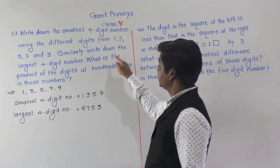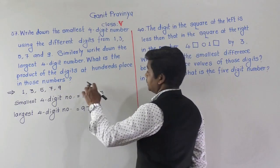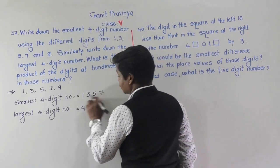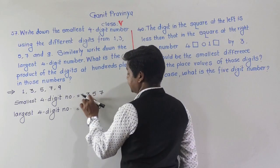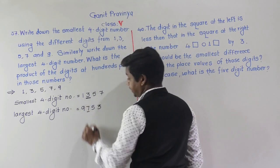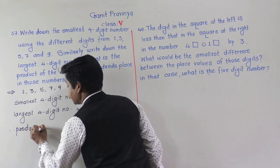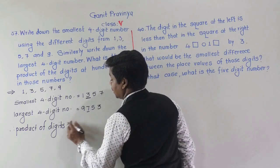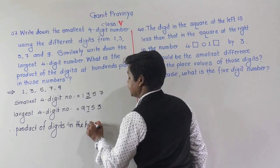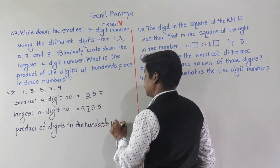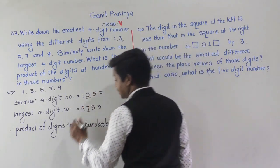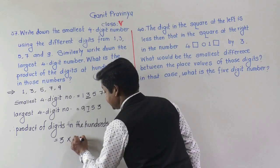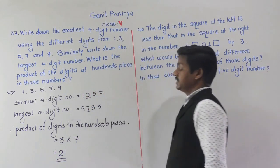Now, what is the product of the digits at the hundreds place in both numbers? In 1,357 the digit at hundreds place is 3. In 9,753 the digit at hundreds place is 7. Product means multiplication, so 3 multiplied by 7 equals 21. So 21 is the answer.